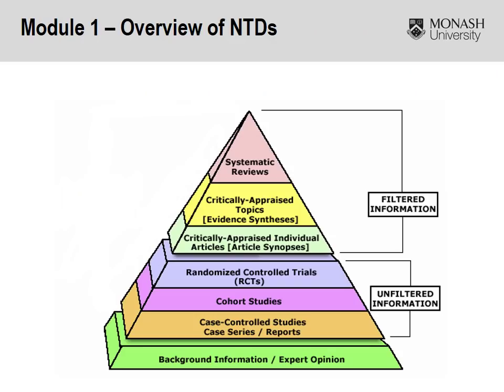Here we have the typical evidence pyramid. Systematic reviews are at the top when we look at the different study types. RCTs are at the top of the pyramid, and then we transition down to cohort studies, case control studies, and expert opinion at the bottom.